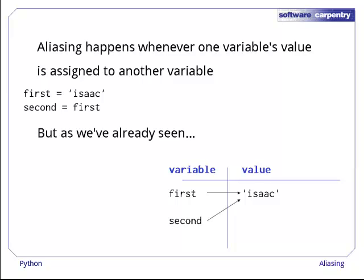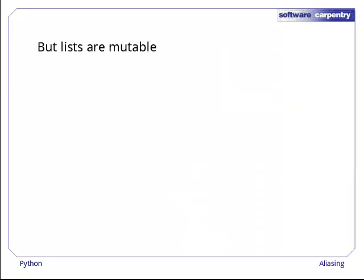This can't cause problems, because as we've already seen, whenever we appear to change a string, Python actually creates a new string behind the scenes. However, this doesn't happen with lists. They can be changed in place.